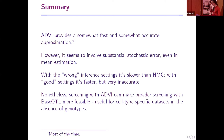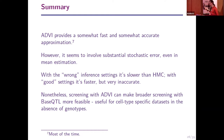To sum up: ADVI provides a somewhat fast and somewhat accurate approximation some of the time. I would be dubious of papers that use it without showing it performs well compared to MCMC. The error seems to be stochastic, which is unexpected for a variational inference method. With the wrong inference settings ADVI can be substantially slower than HMC, but with good settings it's faster yet quite inaccurate and stochastic. Despite this, this screening approach can make broader screens a little more feasible and hopefully useful for more complex model extensions in future.